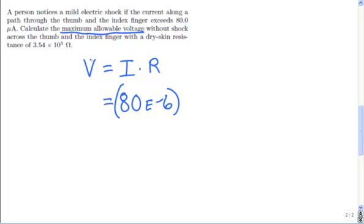R is the resistance, which they gave us as 3.54e5 ohms.